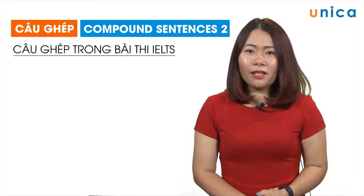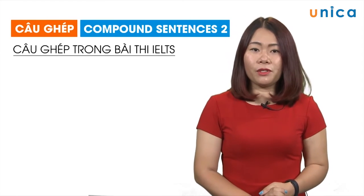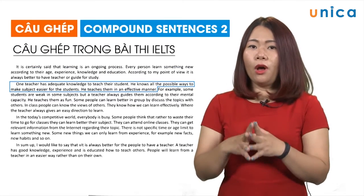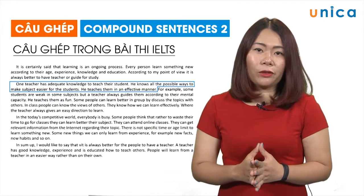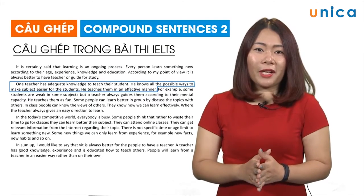Và bây giờ các bạn hãy theo dõi tiếp một số câu sau. Trong đoạn 2, chúng ta tiếp tục thấy rất nhiều câu đơn lẻ. Ví dụ như: 'One teacher has adequate knowledge to teach their student.' 'He knows all the possible ways to make a subject easier for the students.' 'He teaches them in an effective manner.' Vậy tức là chúng ta thấy rằng tất cả các câu này đều tách ra khỏi nhau hoàn toàn và ngăn cách với nhau bởi các dấu chấm — tức là 'period'.